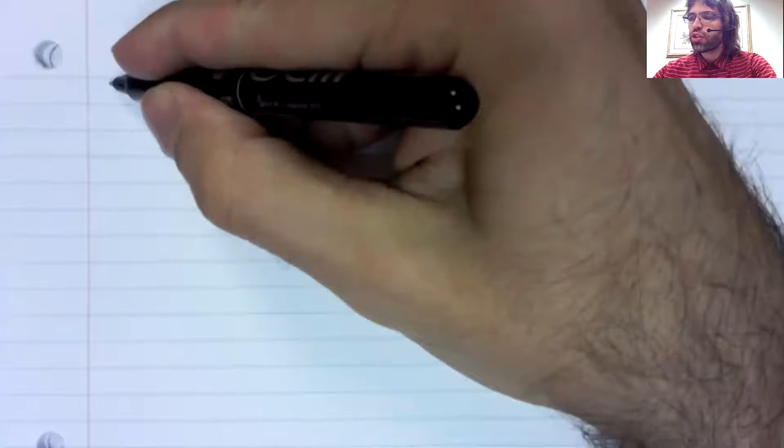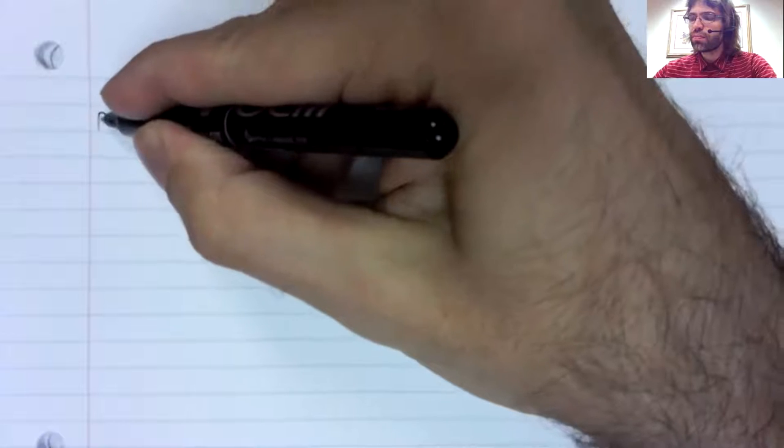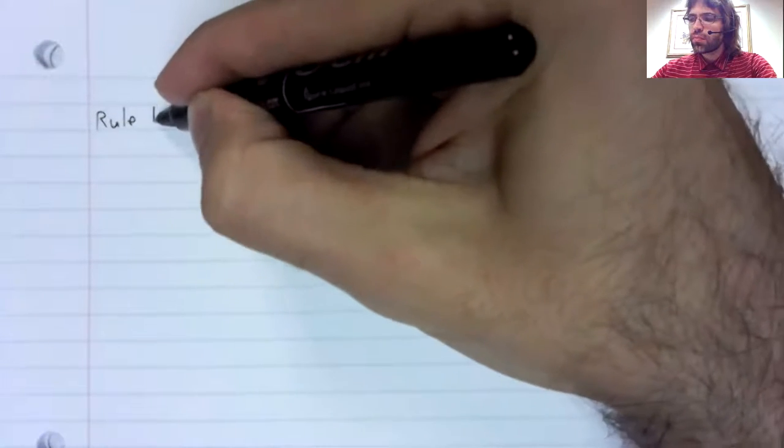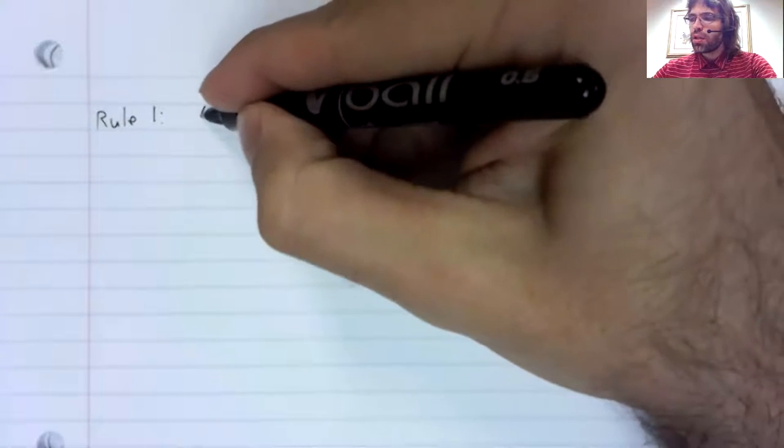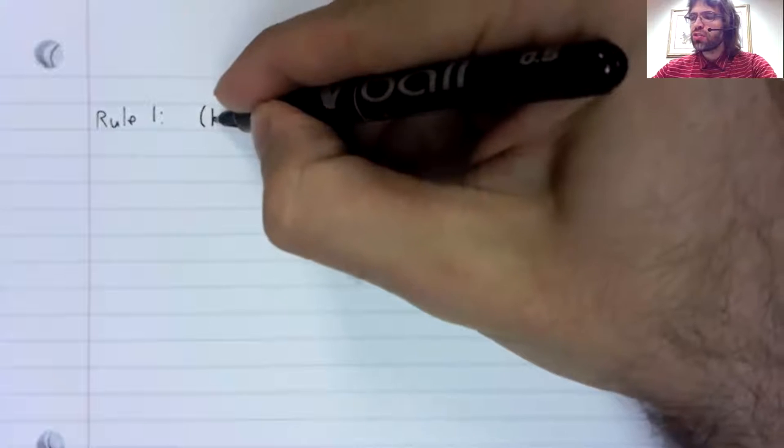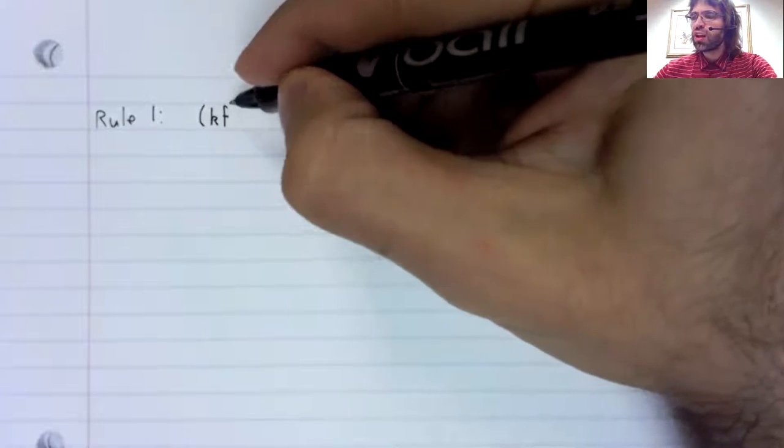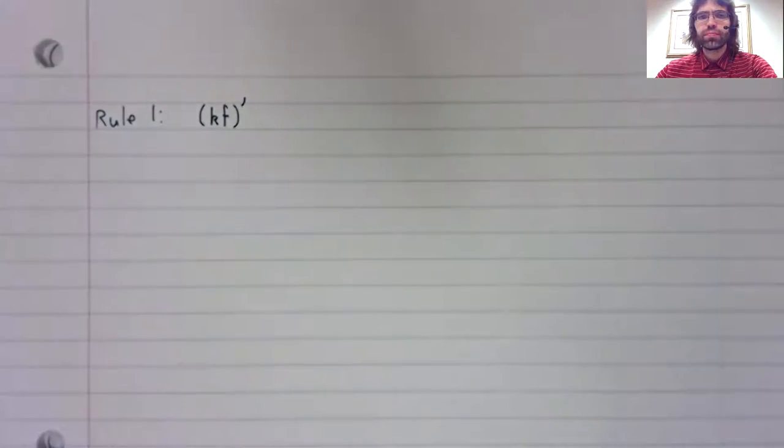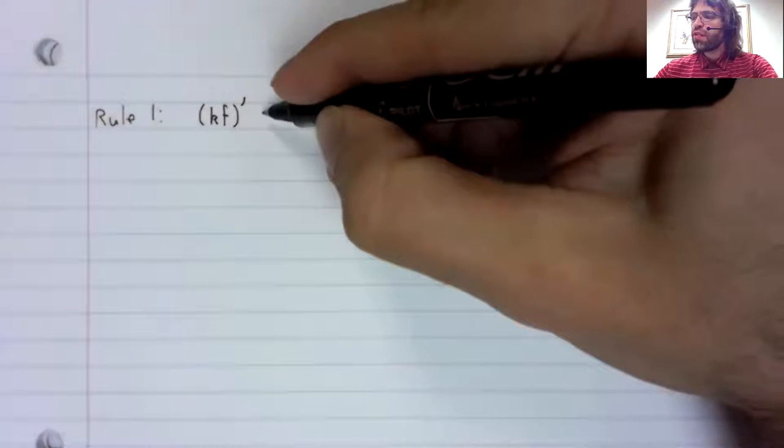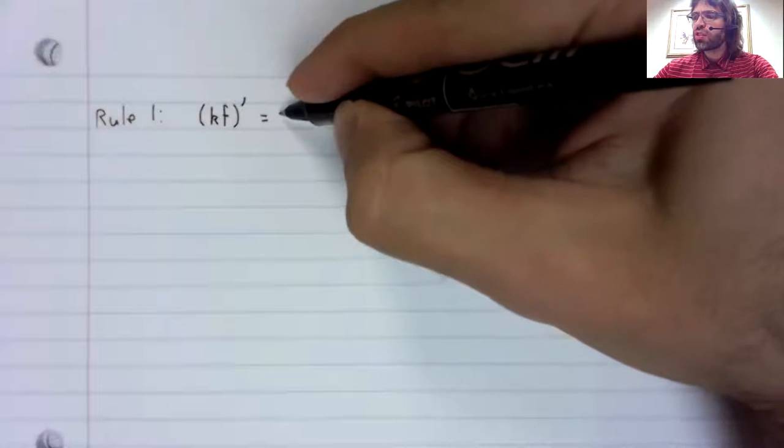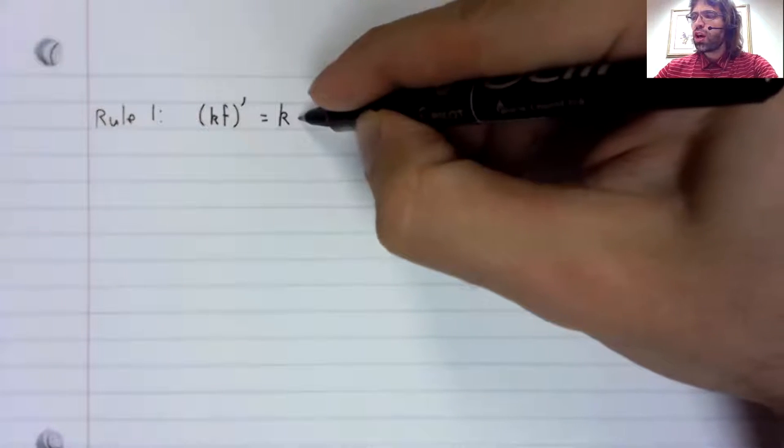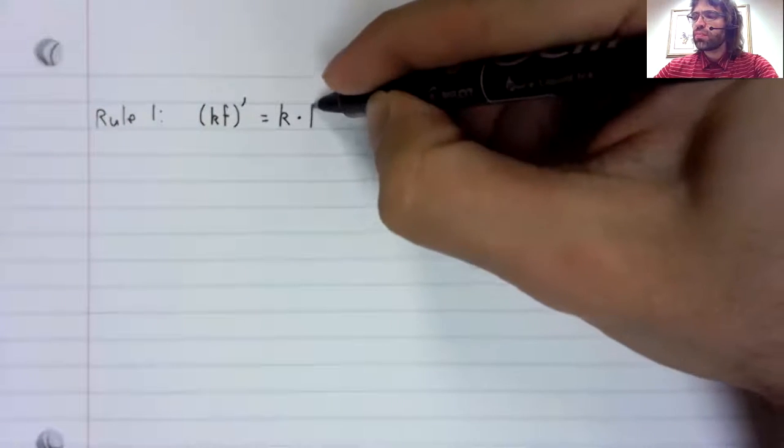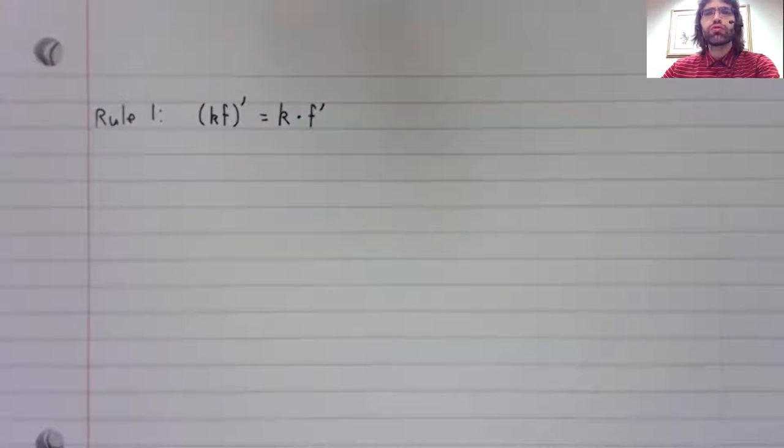Suppose that we want to differentiate a constant times a function. The derivative of a constant times a function is the constant times the derivative of the function.